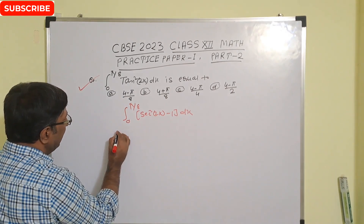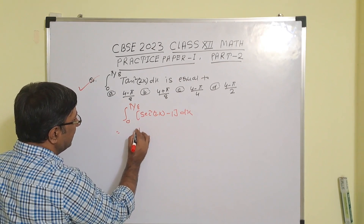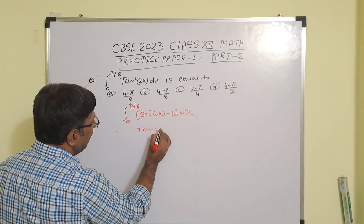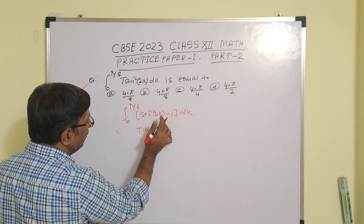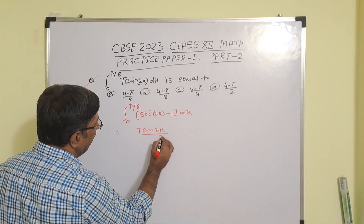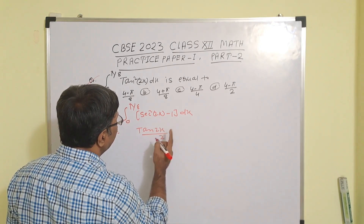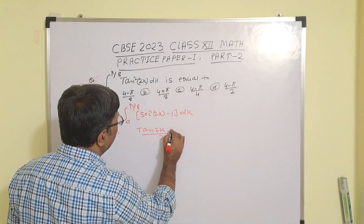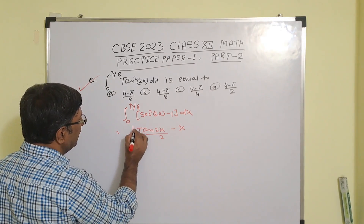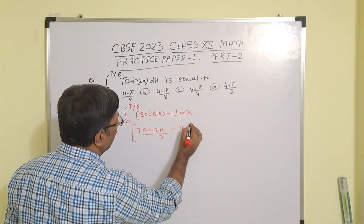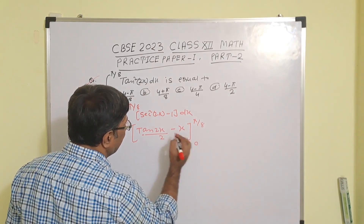You know the integration of sec²(x) is tan(x). So the integral of sec²(2x) gives tan(2x), and since the coefficient of 2x is 2, this becomes tan(2x) by 2. And the integral of minus 1 is minus x. The upper limit is π/8 and the lower limit is 0.